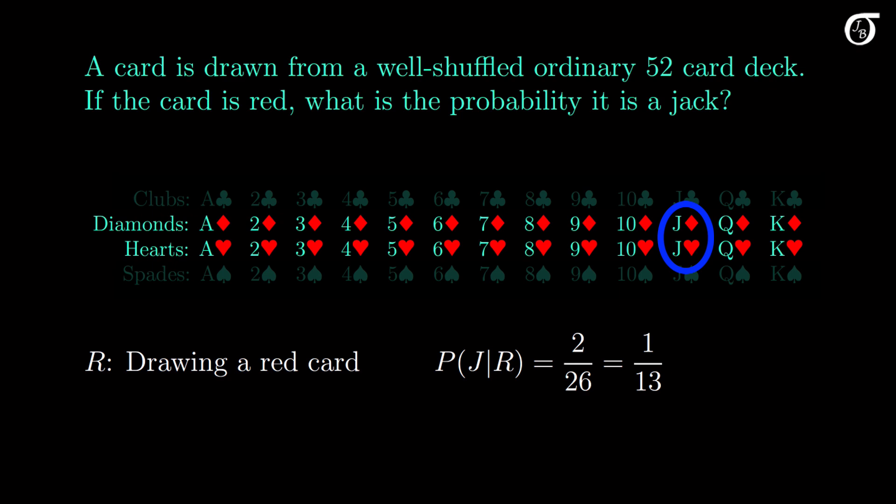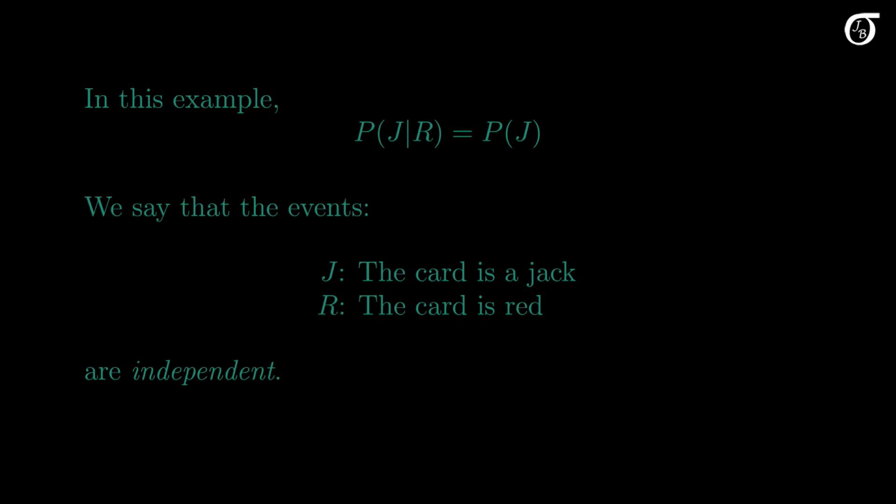This is the same as the unconditional probability of drawing a jack — which leads to a very important point. The conditional probability the card is a jack given it is red is equal to the unconditional probability that the card is a jack. Because of this, we say that the two events are independent. Knowing that the card is red does not change the probability it is a jack. Independence is a very important concept in probability and statistics, and I'll look at independence in much greater detail in another video.